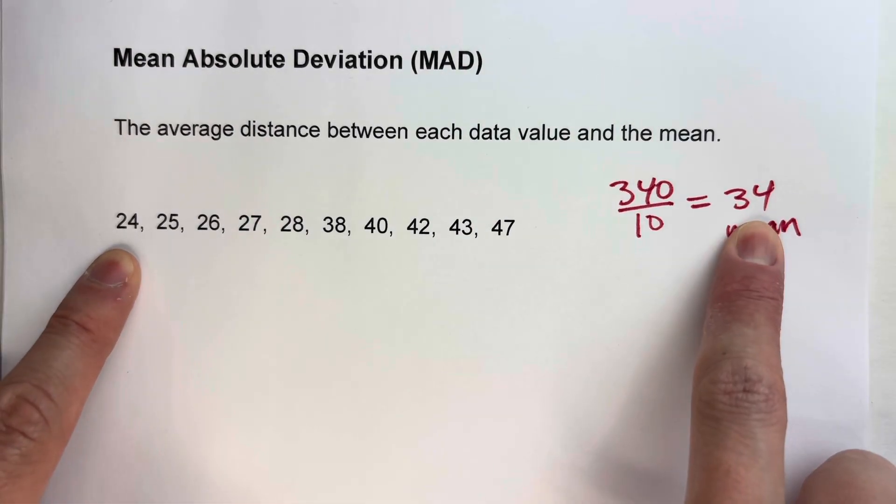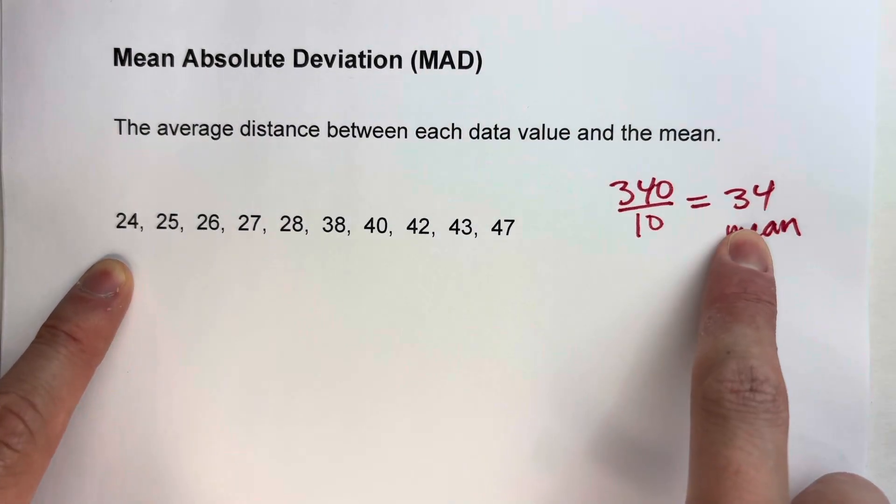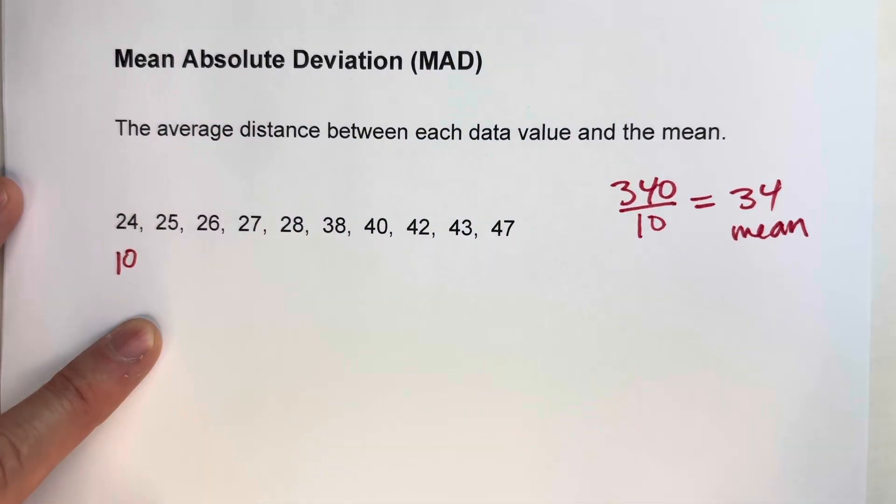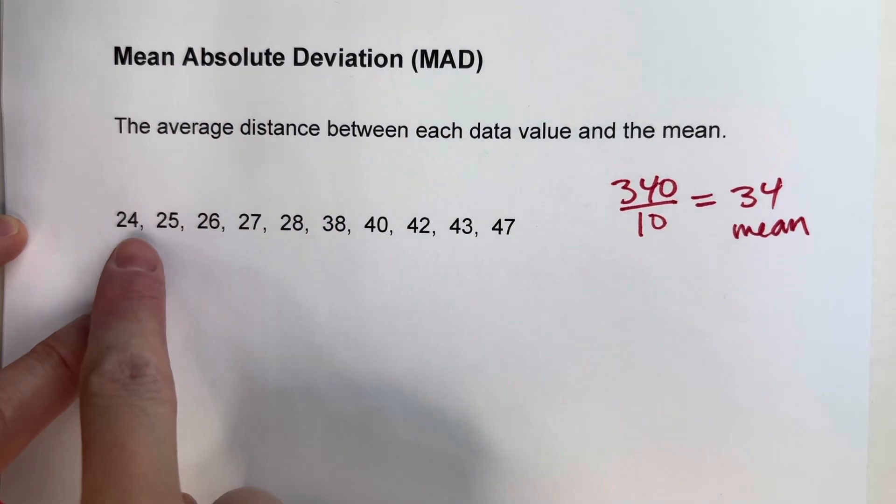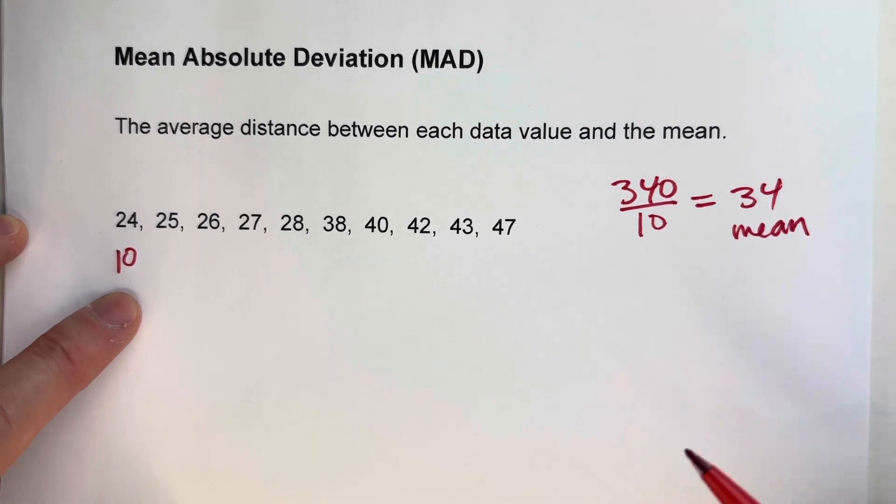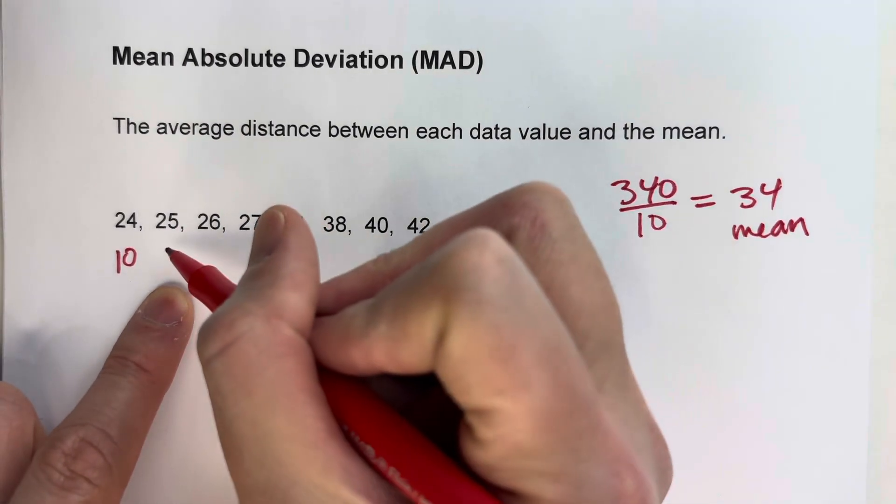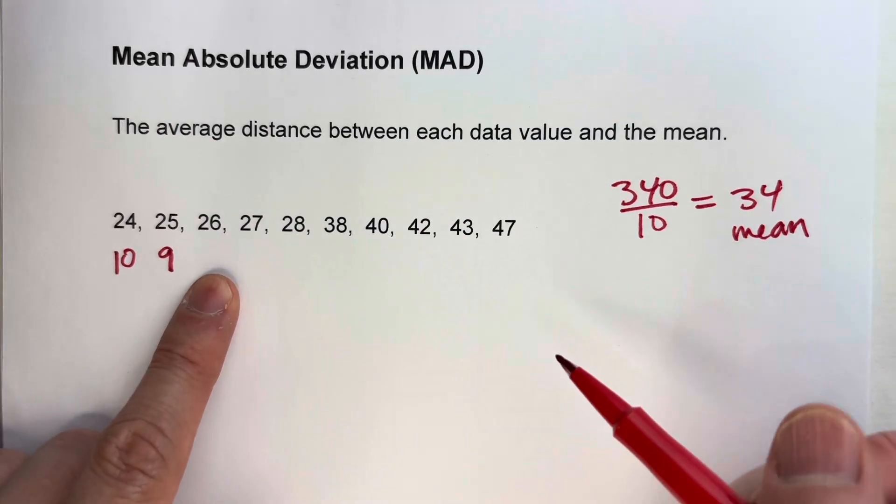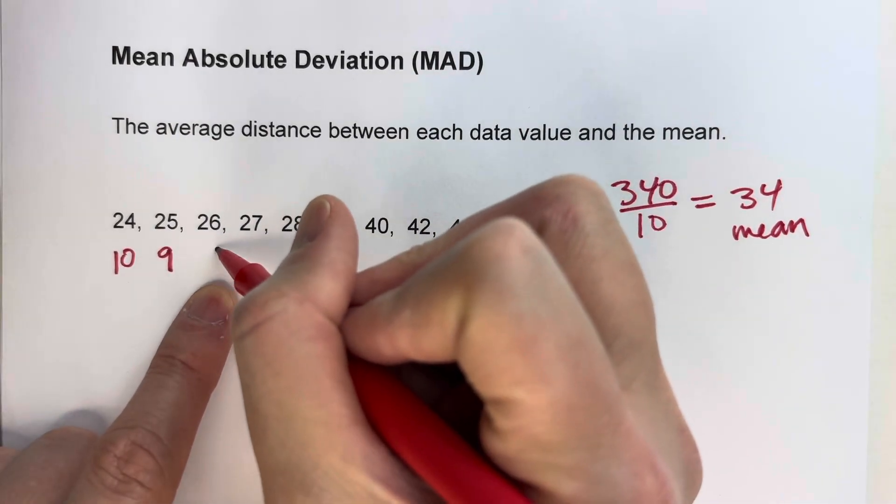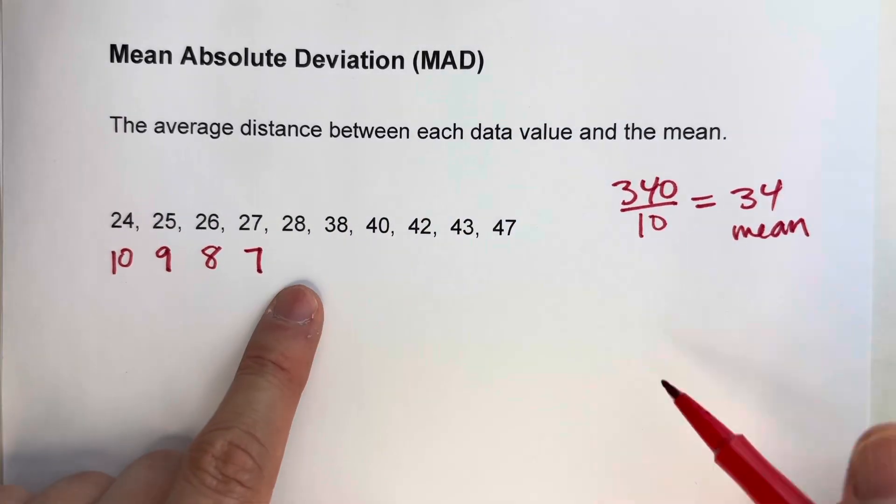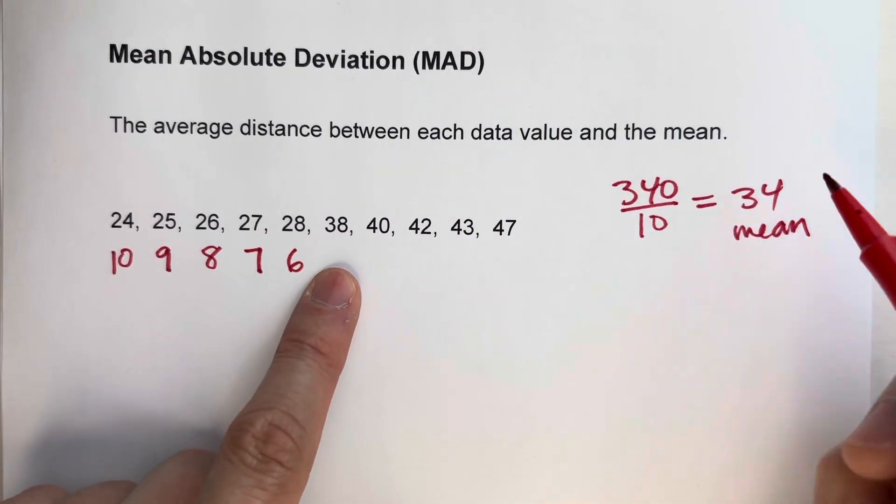For example, 24 is 10 away from the mean. So its absolute deviation is 10. And you don't have to worry about it being 10 below. We're just going to know that it's 10 away from it. Same with 25, that's 9 away. 26, that is 8 away. 27, that's 7 away. 28 is 6 away.